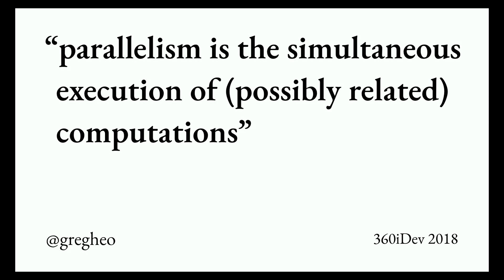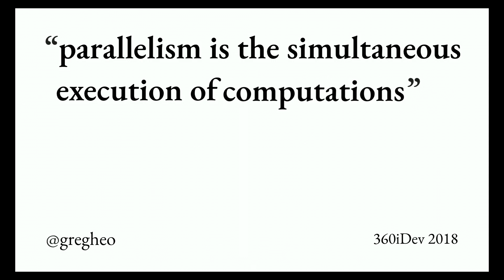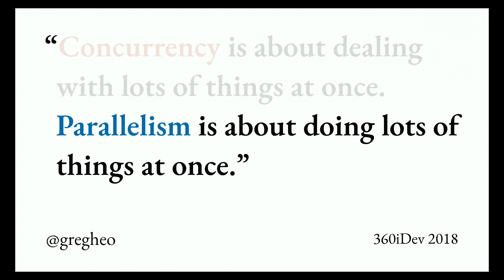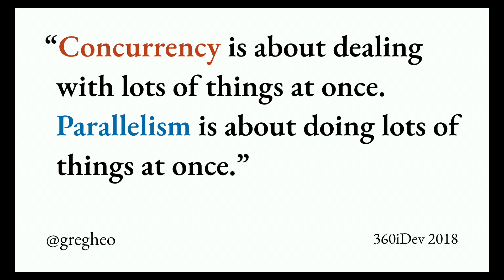Concurrency is not about running stuff at the same time — it's a question of organization or structure. Parallelism, on the other hand, is the simultaneous execution of computations. To sum up: concurrency is about dealing with lots of things at once; parallelism is about doing lots of things at once. Within this context, I consider parallelism to be outside my scope — that's the CPU's job or the scheduler's job. My job is making sure programs are structured in a way that lots of things are dealt with properly. Concurrency is a prerequisite for parallelism.